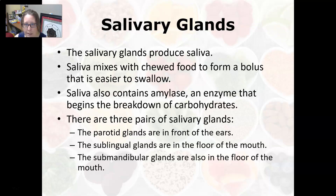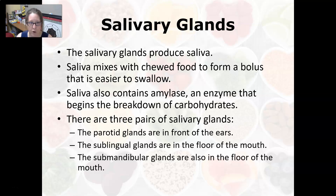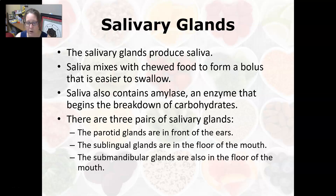The salivary glands produce saliva, which mixes with chewed food to form a bolus that is easier to swallow. Saliva contains amylase, an enzyme that begins breaking down carbohydrates such as starchy foods. There are three pairs of salivary glands: the parotid glands, located in front of the ears; the sublingual glands, in the floor of the mouth; and the submandibular glands, also in the floor of the mouth.